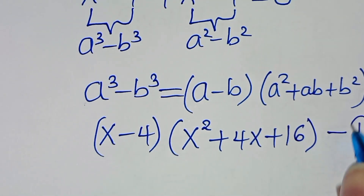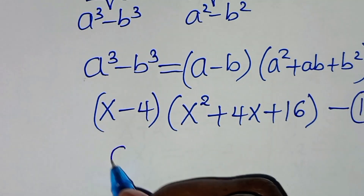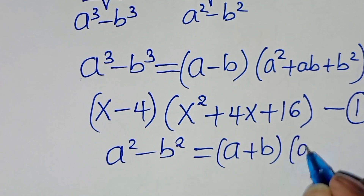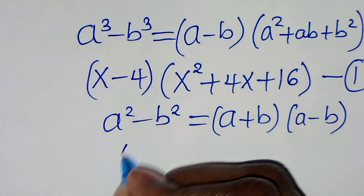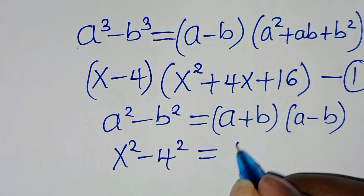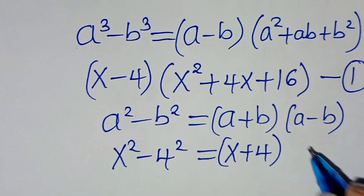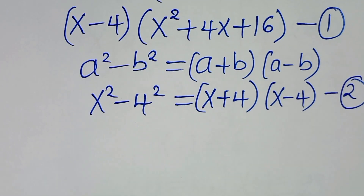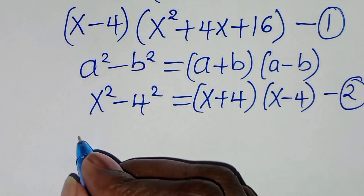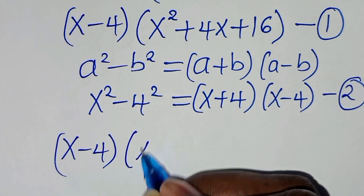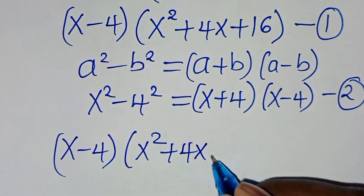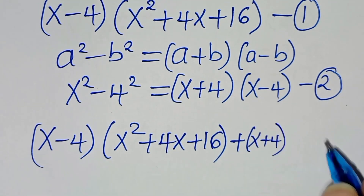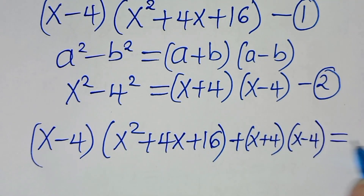Let's call this equation 1. The second part is the difference of two perfect squares, a squared minus b squared, which equals (a plus b)(a minus b). So x squared minus 4 squared gives us (x plus 4)(x minus 4). Let's call this equation 2. Adding equation 1 and equation 2, we have (x minus 4)(x squared plus 4x plus 16) plus (x plus 4)(x minus 4) equals 0.